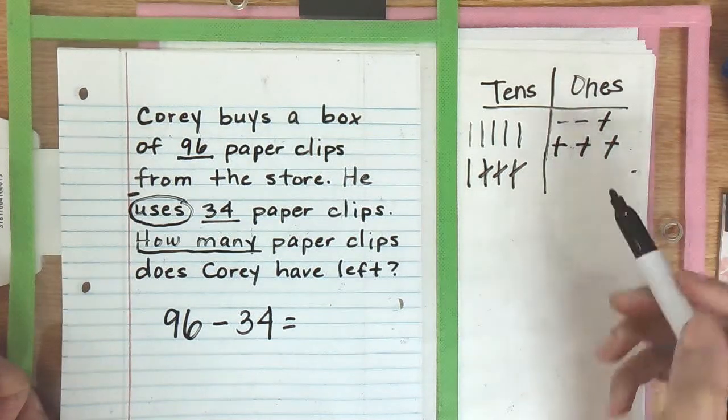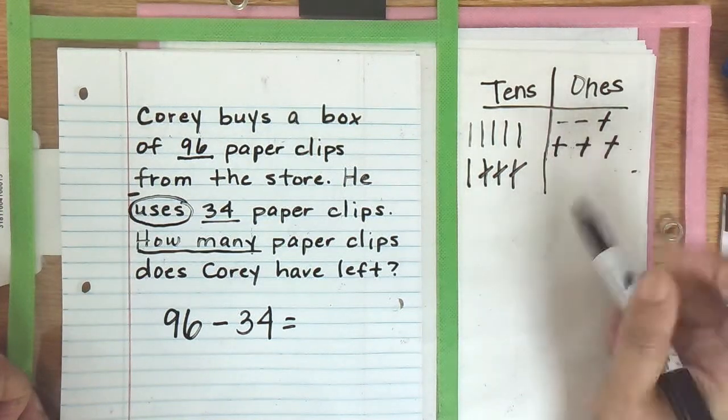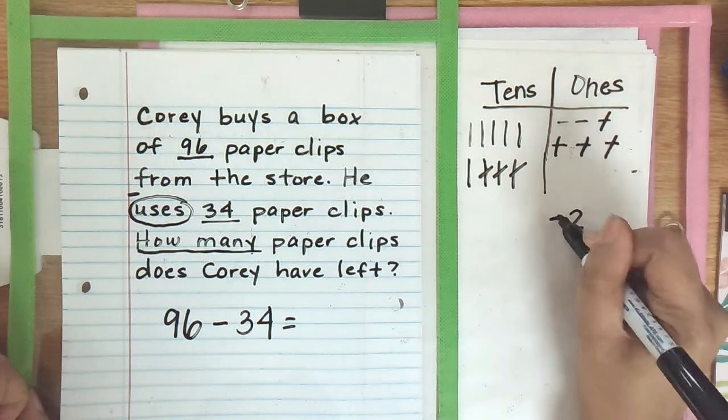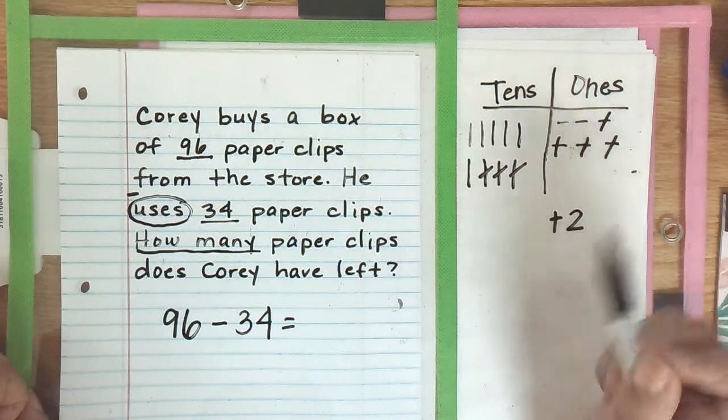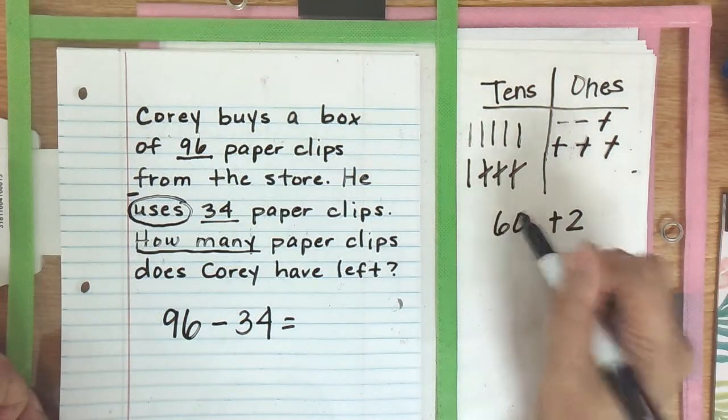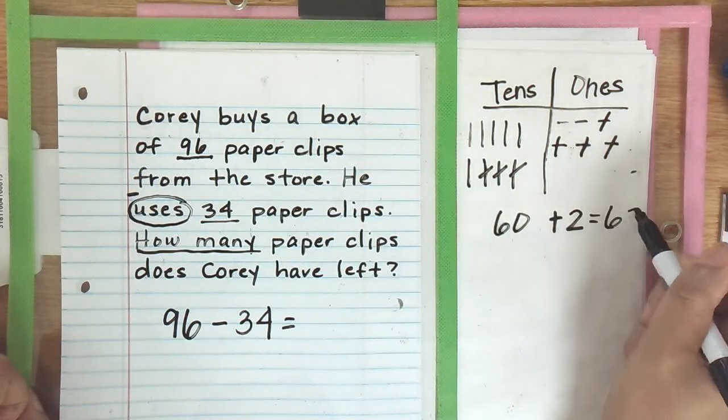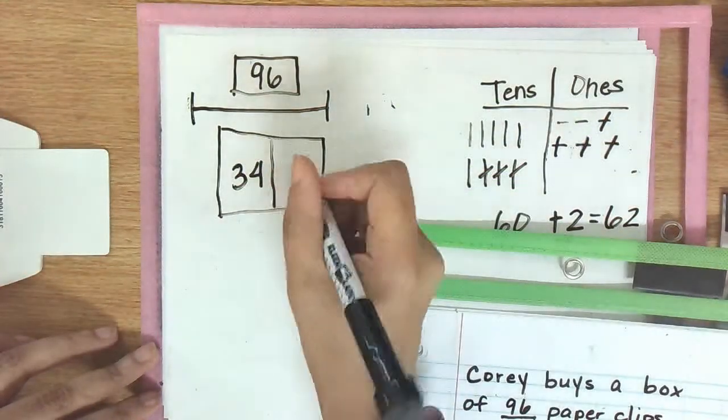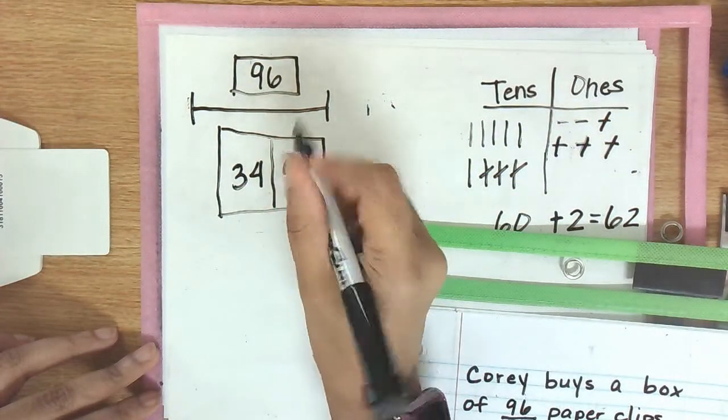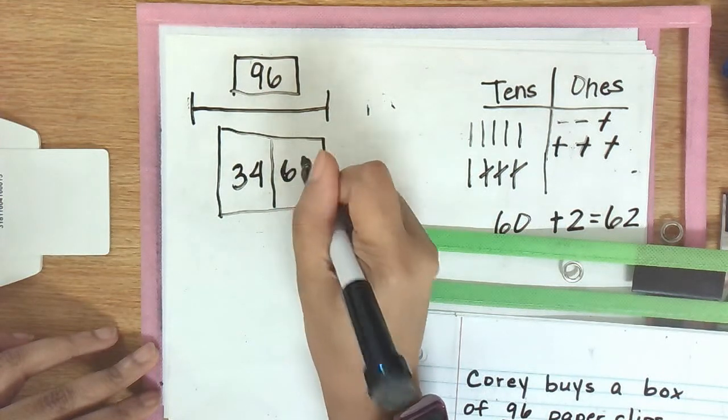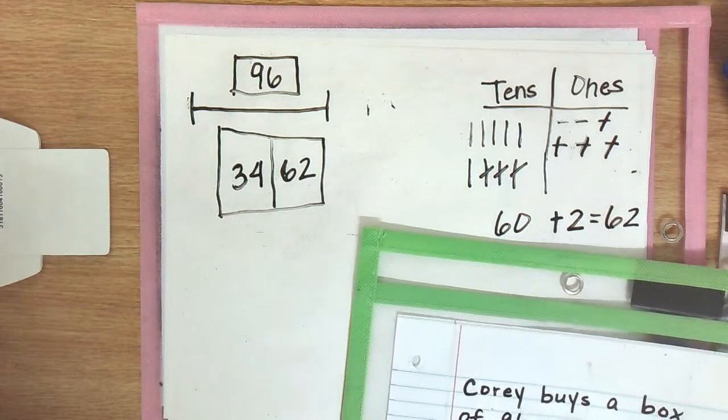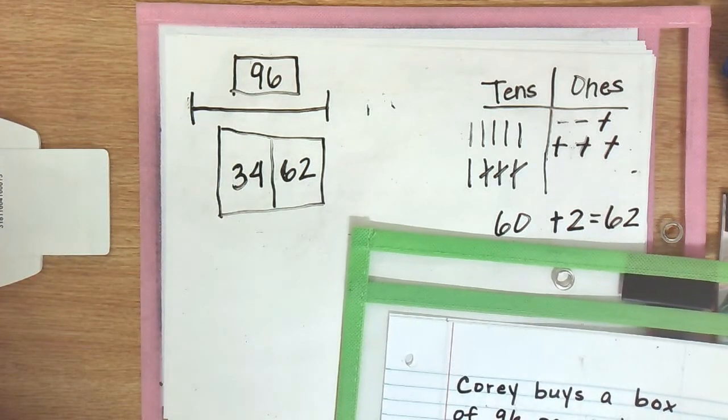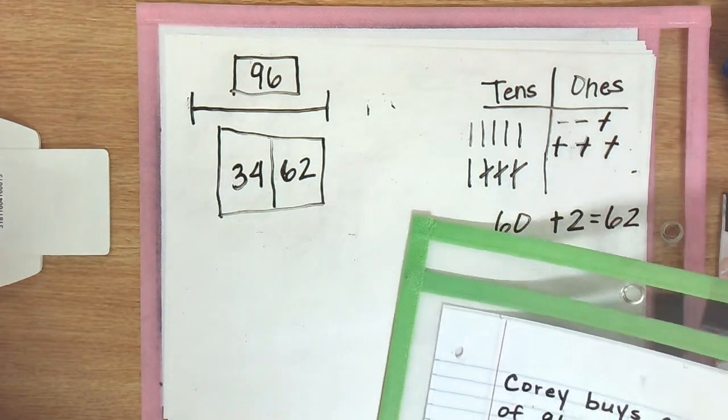Now I'm going to go ahead and put everything back together. I have one, two ones, two ones equals two. And then I have one, two, three, four, five, six, six tens equals 60. So I know my final answer is going to be 62. And if I did the same thing over here with my subtraction, I would still come up with the answer of 62 because if I added 34 and 62 together, I would get 96.